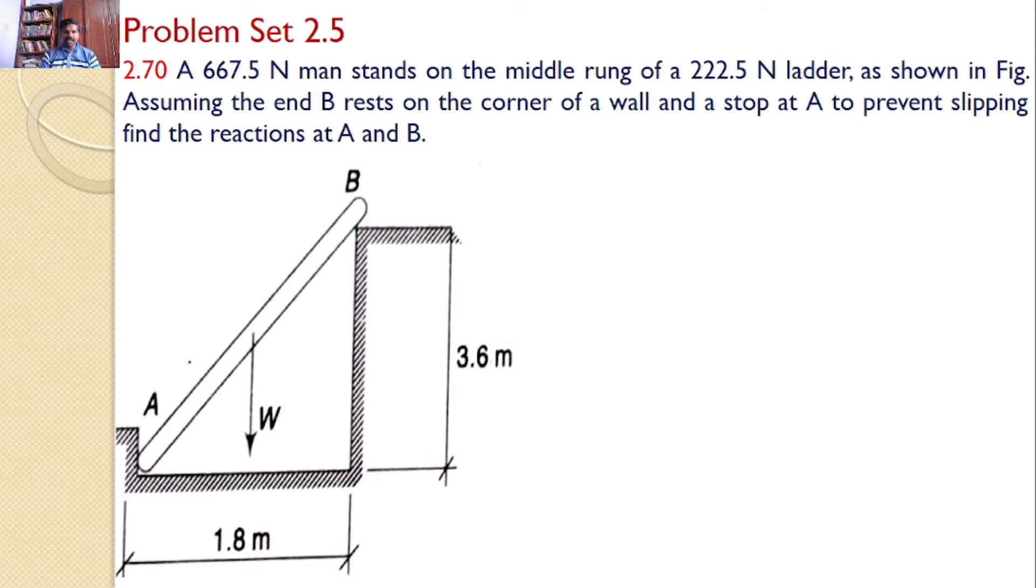This ladder is stopping at B and it is also stopping at A. A man is standing here whose weight is 667.5 Newtons.